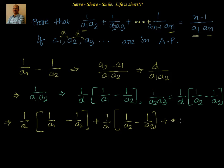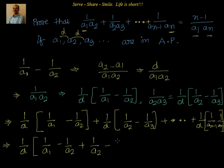This goes on till the last term. And, at the end, I will have 1 by d into 1 by a(n-1) minus 1 by an. That is what I will have in the last term. So, I can take 1 by d common. Then, what is left out now? I can write it as 1 by a1 minus 1 by a2 plus 1 by a2 minus 1 by a3.